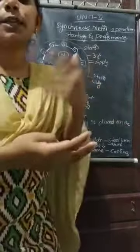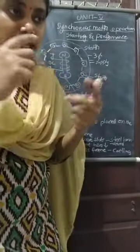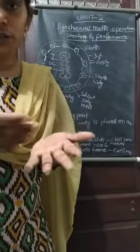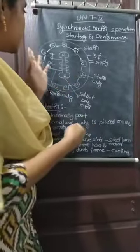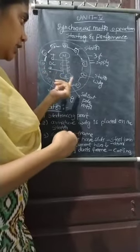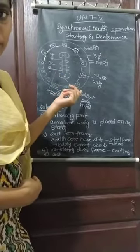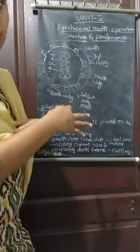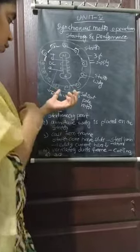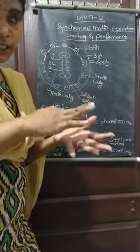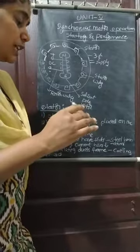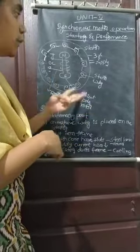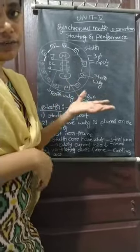The stator is the stationary part with armature winding. Key components include the stator frame — a cast iron frame — as the second point. The third component is the cast iron frame structure.